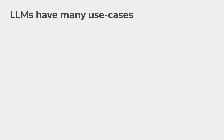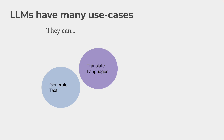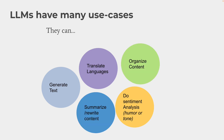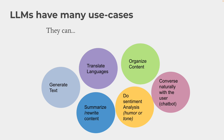What are some of the use cases for large language models? They can do a lot of things — for instance, generate text, translate languages just like we saw in the example, and do sentiment analysis. You can feed it a text and ask: what is the sentiment? Is it humorous? What is the tone? Is it sad? They can also organize content, summarize and rewrite content, converse naturally with users, and let us chat with our own documents that we feed into them or use what the model already knows — including creating chatbots.